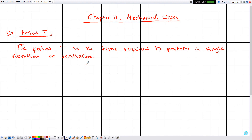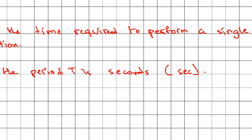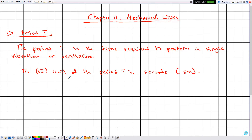Till this moment we are not ready to give any formula for the period T, because we haven't introduced enough physical quantities yet. The SI unit of the period T is seconds, denoted by either 's' or 'sec'. Now for section number two, we have the frequency F.